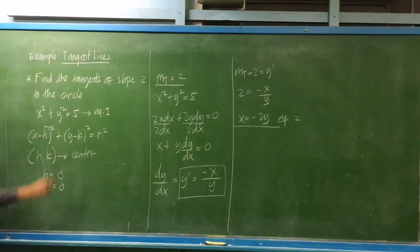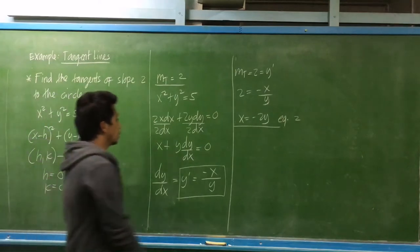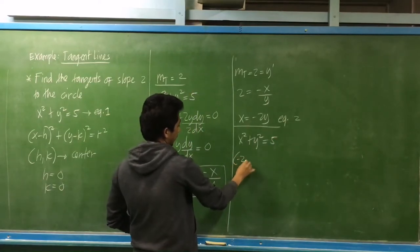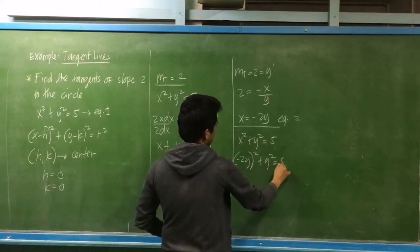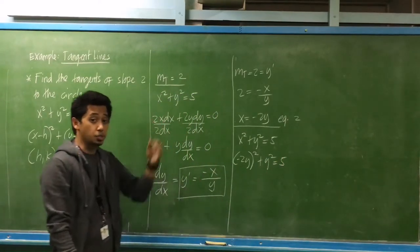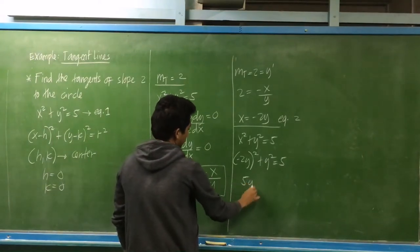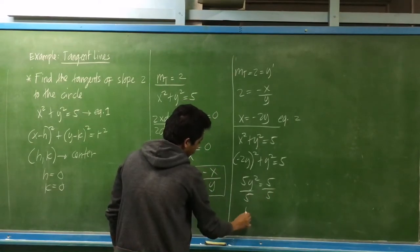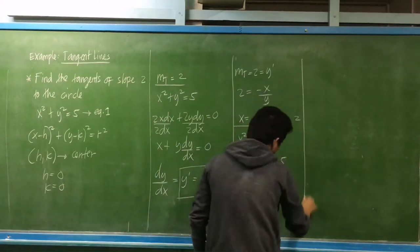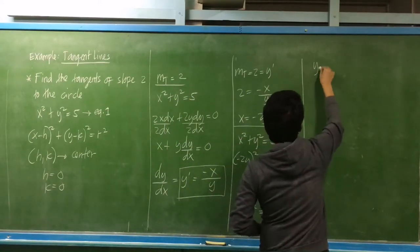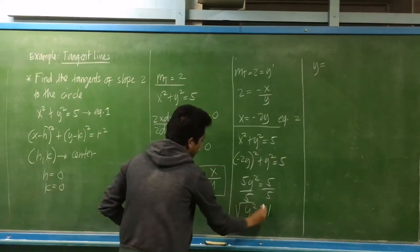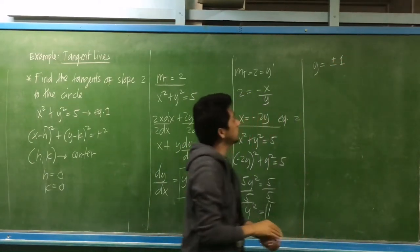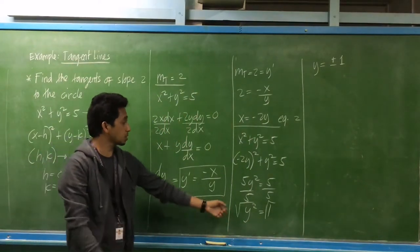From the equation of the circle, x squared plus y squared is equal to 5, substituting x equals negative 2y: negative 2y squared plus y squared equals 5. That gives 4y squared plus y squared equals 5y squared equals 5. Dividing by 5, y squared is equal to 1. Taking the square root of both sides, y is either positive or negative 1.